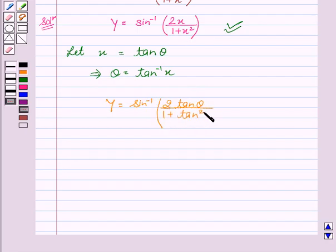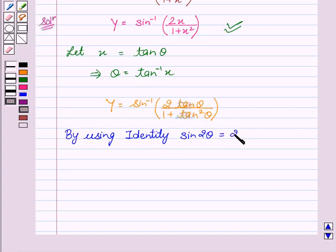Now, by using identity that is sin 2 theta equals 2 tan theta upon 1 plus tan squared theta, we get y equals sin inverse sin 2 theta.